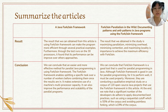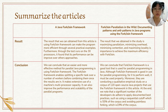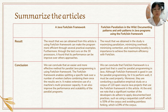The result obtained from the first article is that using the Fork/Join framework can make programs more efficient, as shown through several practical examples. Furthermore, through test runs on 30 processes, it was found that its performance can be improved over other approaches. The result from the second article is that maximizing the parallel region, minimizing overhead, minimizing contention, and minimizing locality issues are important to achieve maximum efficiency with the Fork/Join framework.